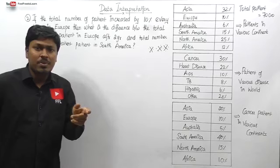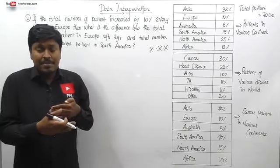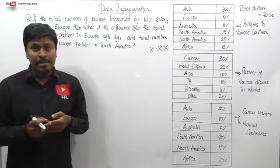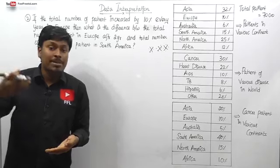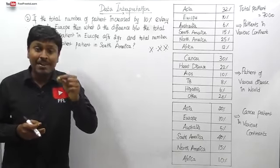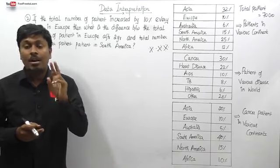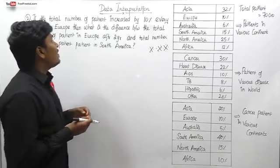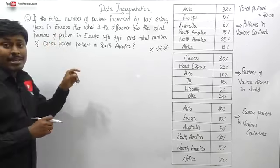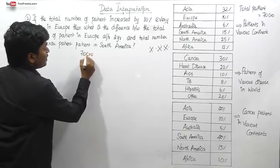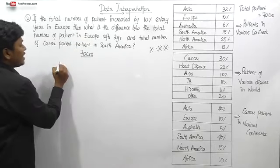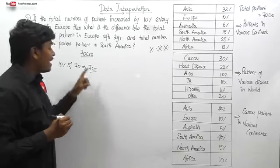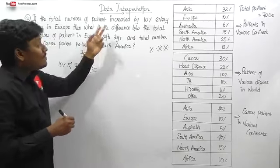For example, if we are in 2017 and need to find population after 2 years, use P into (1 + r/100)^n. If they ask population from 2 years ago, use P divided by (1 + r/100)^n. These two formulas are most important for population increase and decrease problems. First, let's find total patients in Europe: 10% of 70 crores equals 7 crores.